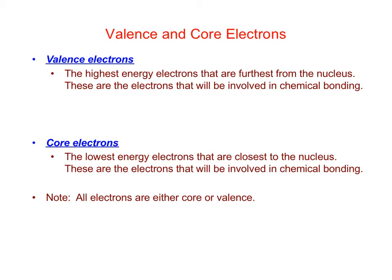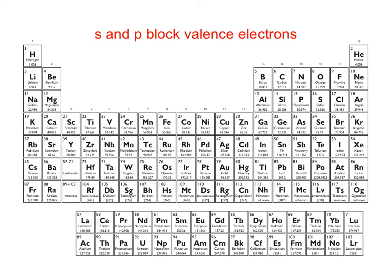All electrons are either core or valence. Every electron is either classified as a valence electron — involved in chemical bonding — or a core electron, not involved in chemical bonding. For elements that are in the s and the p block, the valence electrons are just the electrons with the highest principal quantum number in the s and p orbitals.